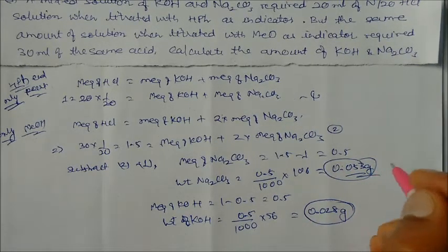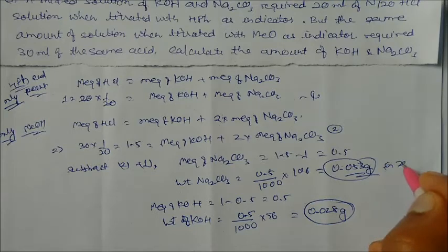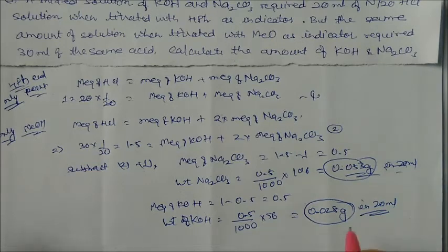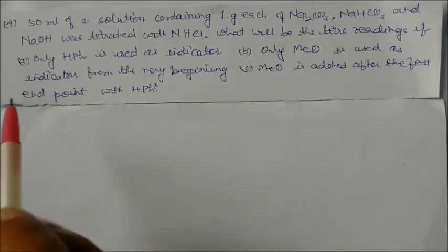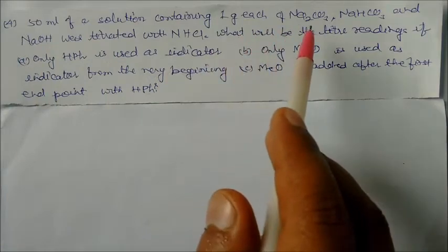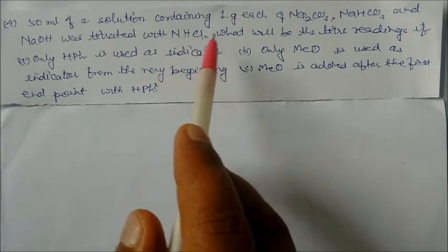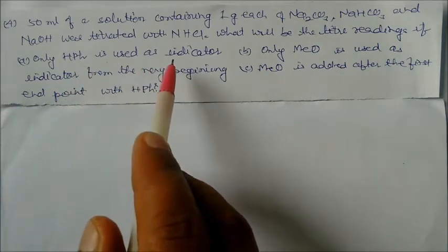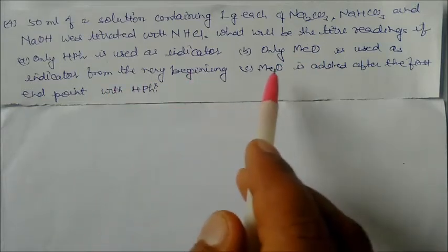These weights are in 20 mL of solution. For one liter, we would scale up accordingly. Next problem: 50 mL of a solution containing 1 gram each of sodium carbonate, sodium bicarbonate, and sodium hydroxide is titrated with 1 normal HCl. What will be the titration readings at neutralization point if: (a) only phenolphthalein is used, (b) only methyl orange is used, (c) methyl orange is added after the first endpoint with phenolphthalein?